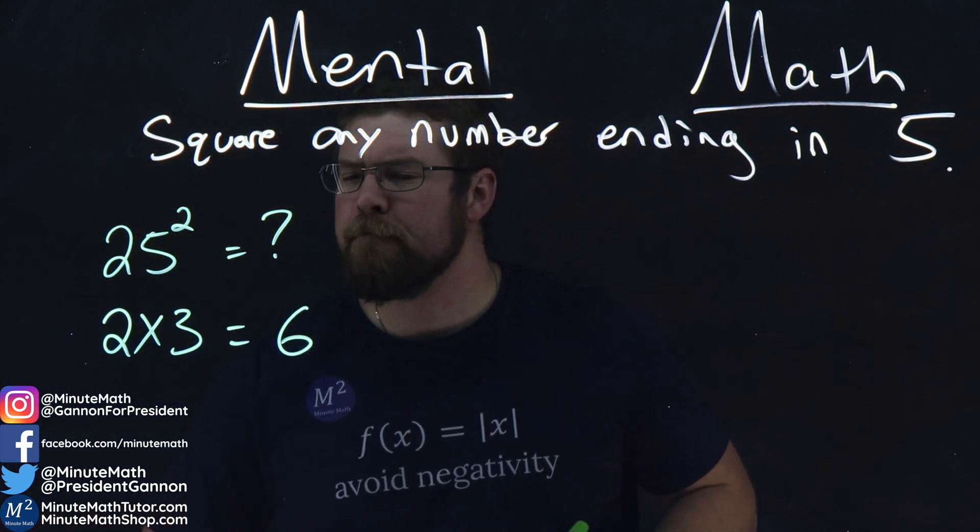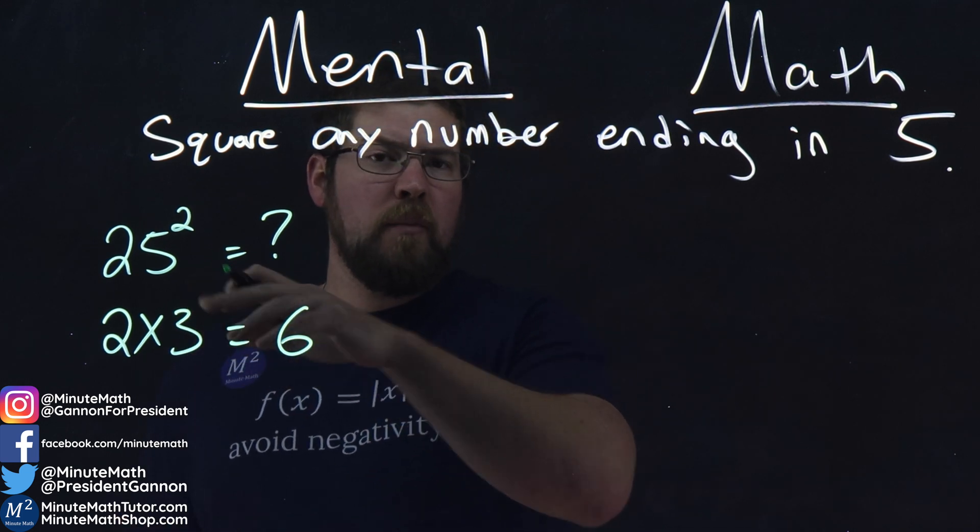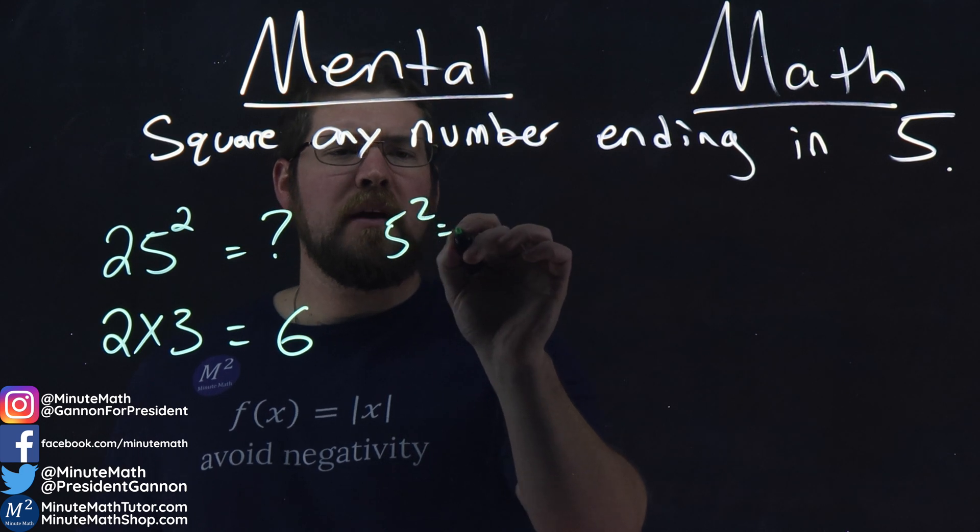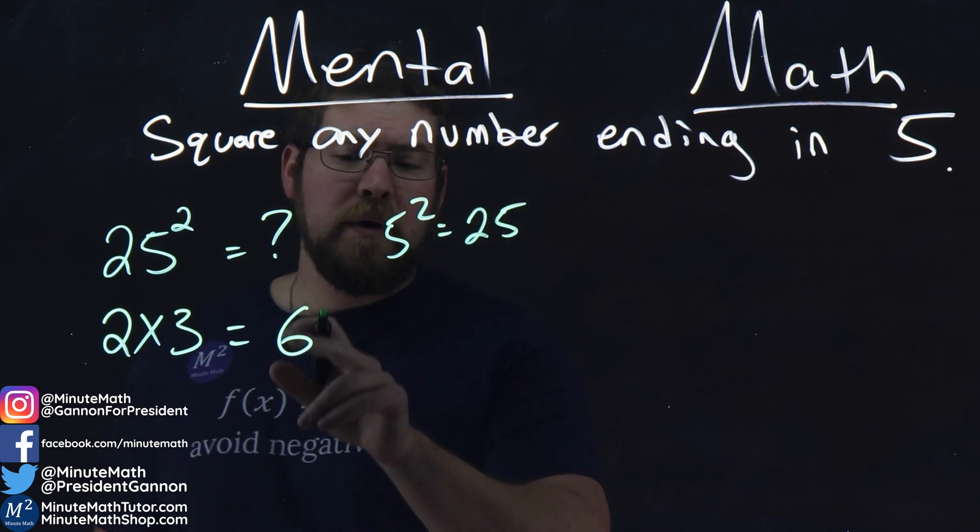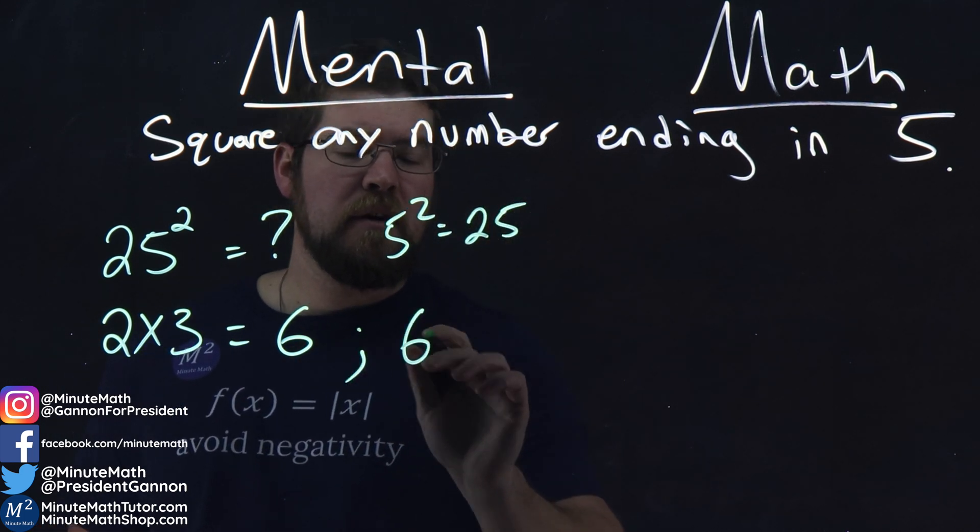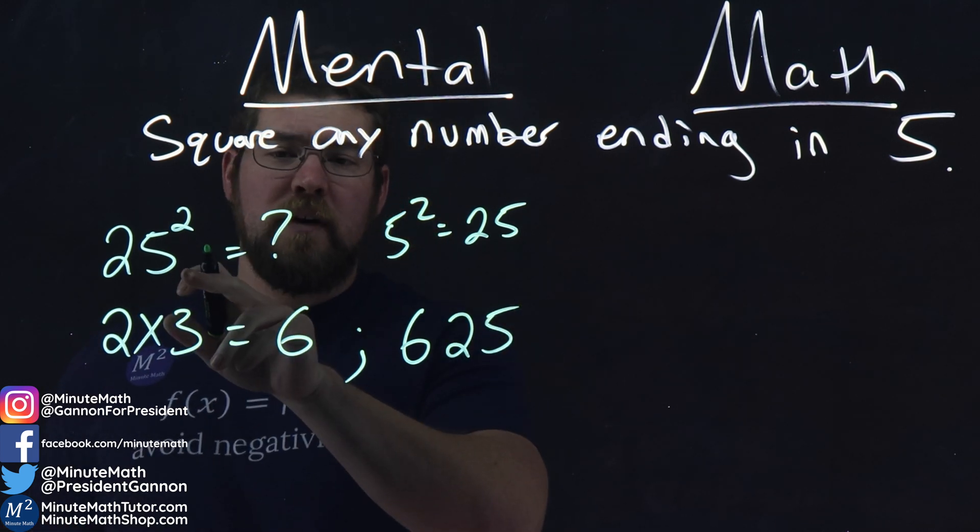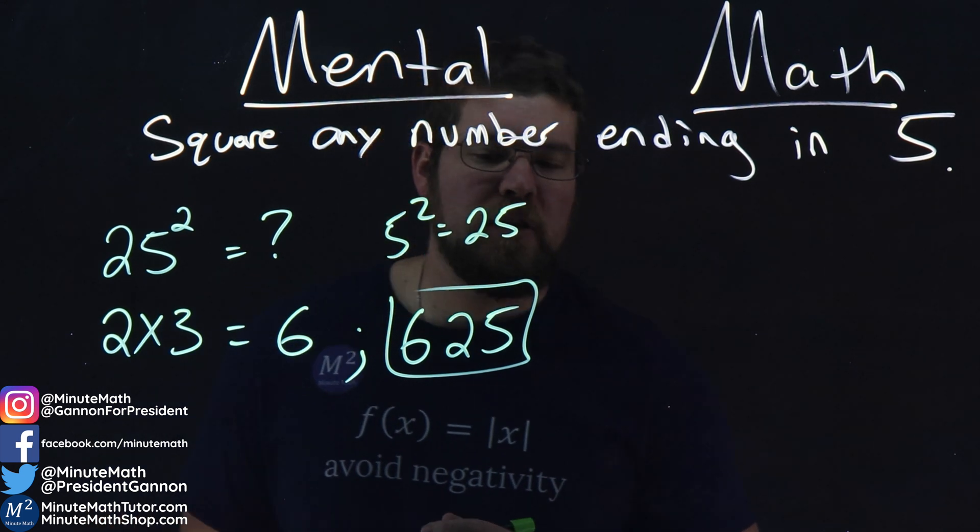We can do that one in our head. Well, then what we do, we take 5 squared, we know is 25, right? 5 squared equals 25. What we do is we take the 6, we put a 25 at the end of it, and that's it. 25 squared is equal to 625.